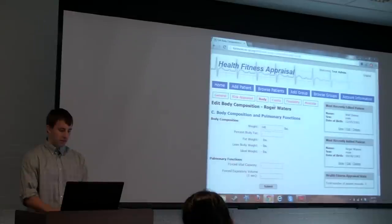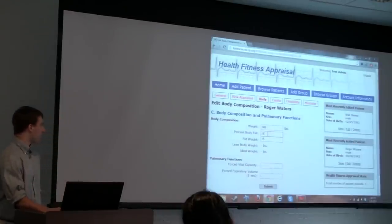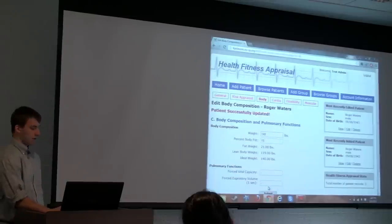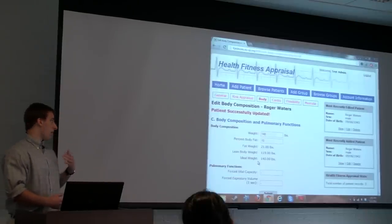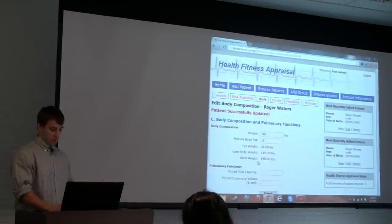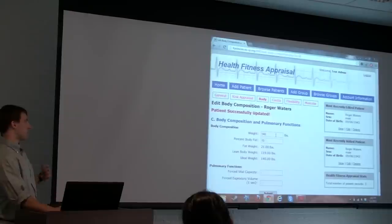We're going to fill out the body composition page. We'll put in a percent body fat of 15%, and when we click submit or press enter, it automatically loads and fat weight, lean body weight, and ideal weight have been calculated. This is based on the patient's age, their sex, and other factors such as weight. Now we've edited this patient and added something else to their fitness report.